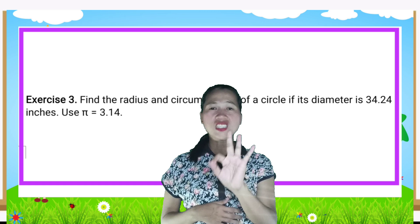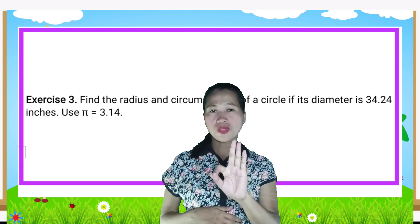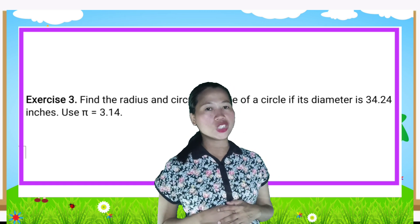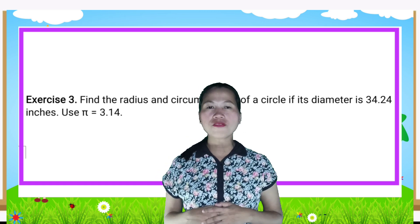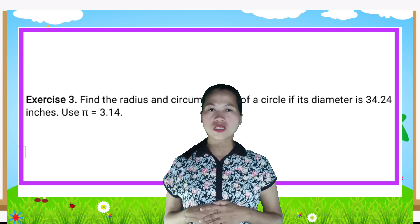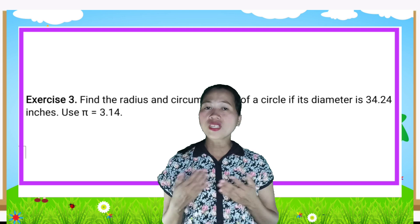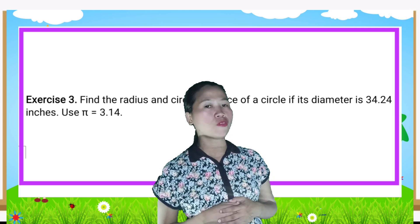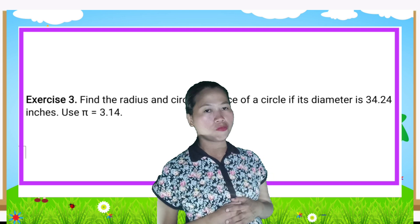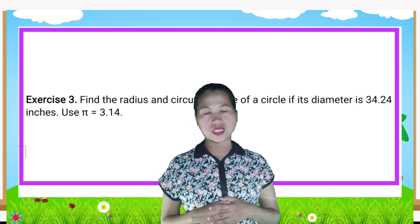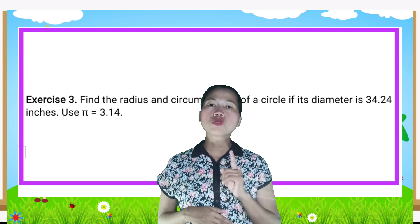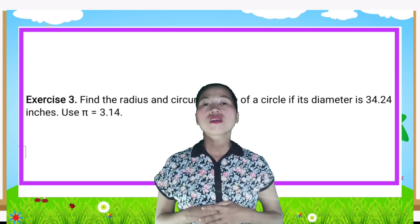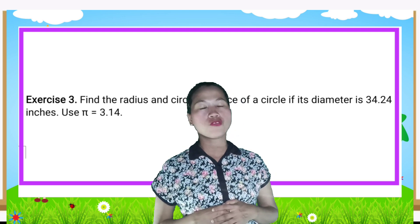For Exercise 3, find the radius and circumference of a circle if its diameter is 34.24 inches. Use π = 3.14.